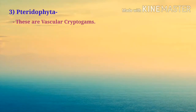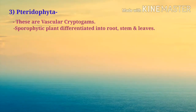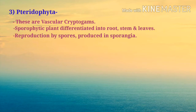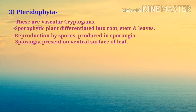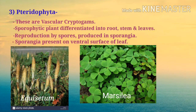Next is pteridophyta. These are vascular cryptogams. The sporophytic plant is differentiated into root, stem, and leaves. Pteridophyta is the third division of cryptogams and is vascular, whereas bryophytes and thallophytes have no vascular tissue. Reproduction is by spores produced in sporangia. Sporangia are present on the ventral surface of the leaf. Examples are Equisetum and Marsilea. For now, remember that pteridophytes are vascular cryptogams, while thallophytes and bryophytes are non-vascular cryptogams.